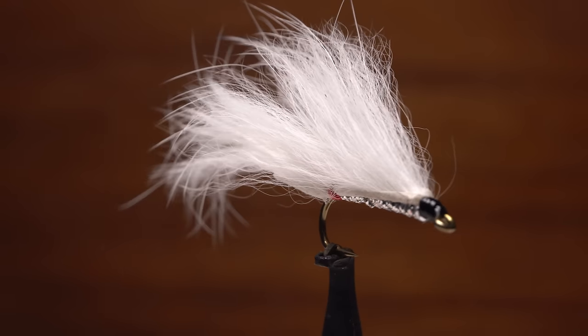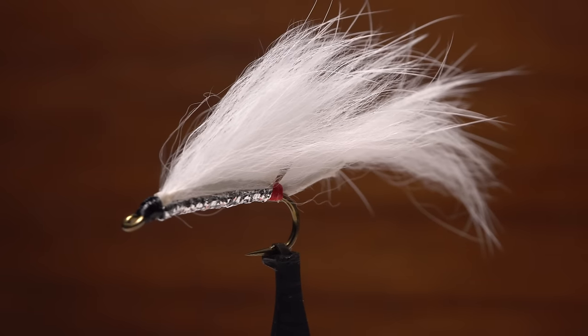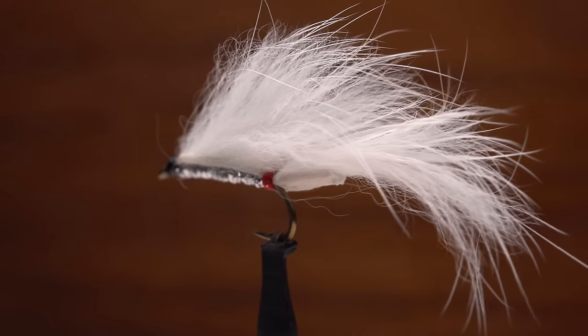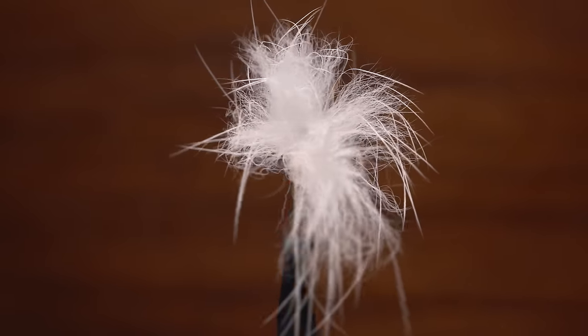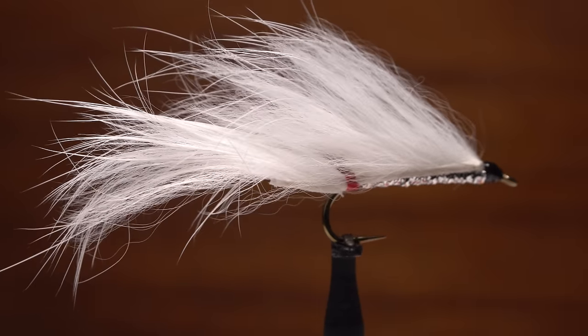This is Jeff Blood's White Death, a well-known Great Lakes steelhead pattern. It's for all intents and purposes nothing more than an easy to tie zonker. Here I've taken some liberties with Mr. Blood's materials and tying sequence, but the overall fly is pretty much the same.